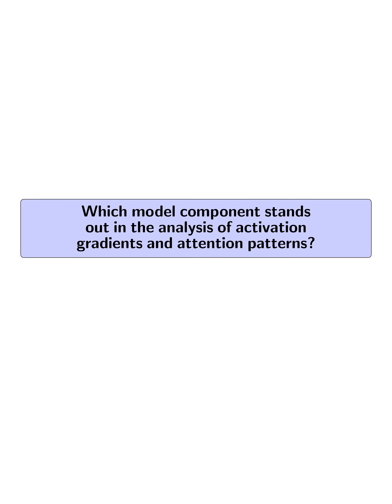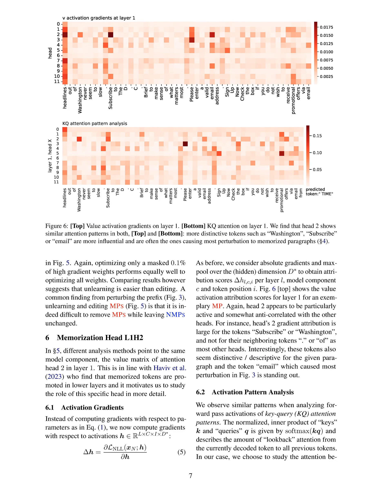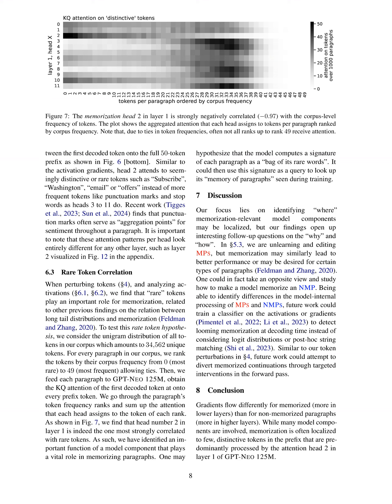Which model component stands out in the analysis of activation gradients and attention patterns? The model component that stands out is attention Head 2 in Layer 1. This specific head shows distinctive behavior by attending predominantly to rare or distinctive tokens in the long tail of the unigram token distribution. The activation gradients and attention patterns analysis reveal that Head 2 in Layer 1 is particularly active and anti-correlated with other heads, focusing on tokens like 'subscribe', 'Washington', 'email', and 'offers', instead of more common tokens like punctuation marks and stop words. This unique behavior suggests its vital role in memorizing paragraphs, aligning with the hypothesis that the model creates a signature of each paragraph based on its rare words to recall memorized information during training.